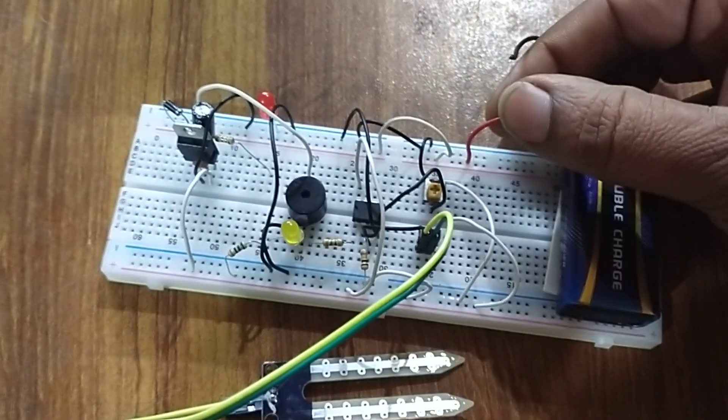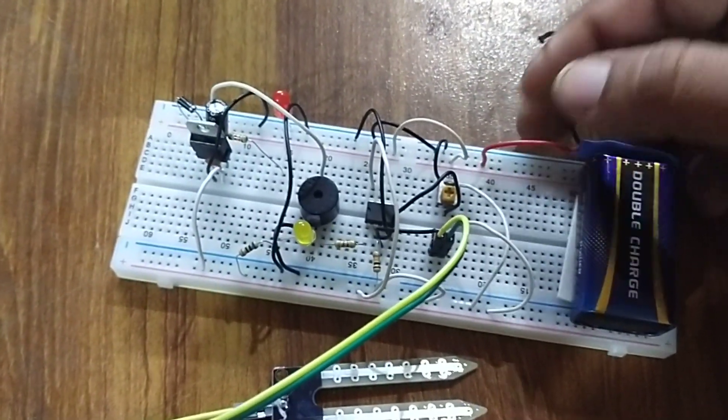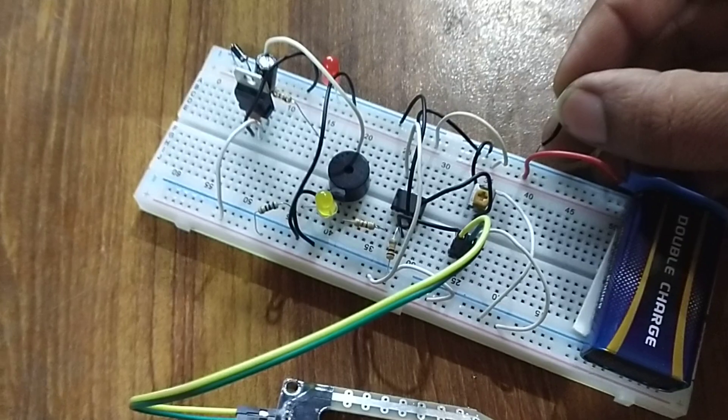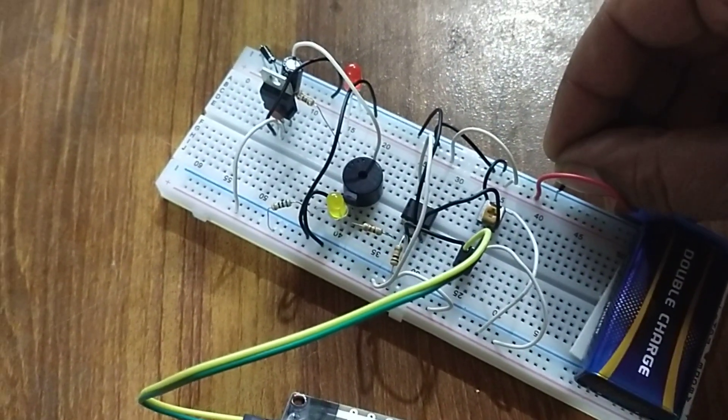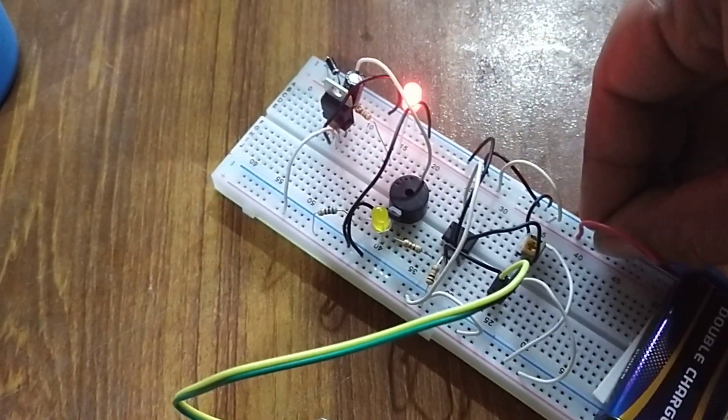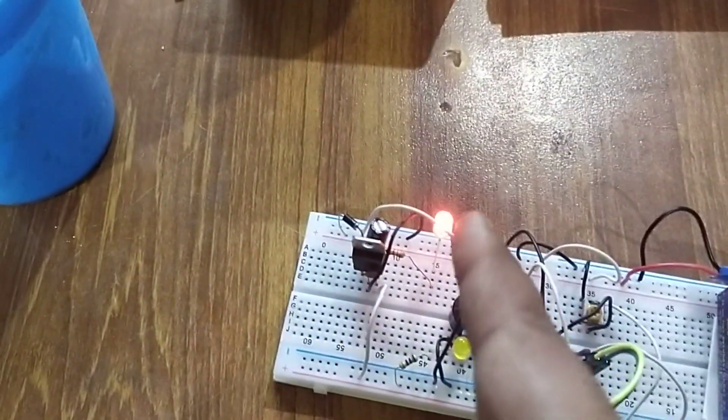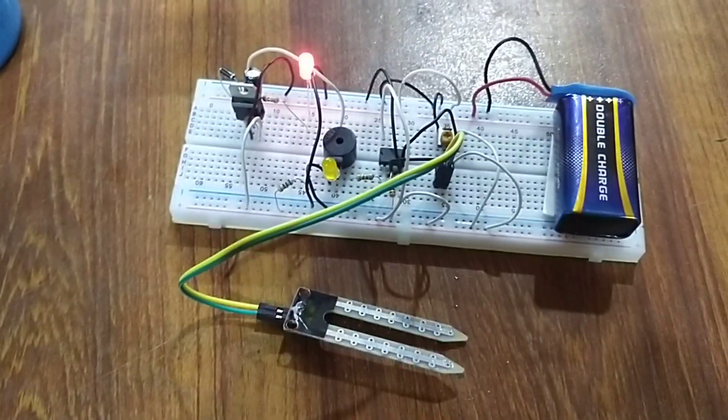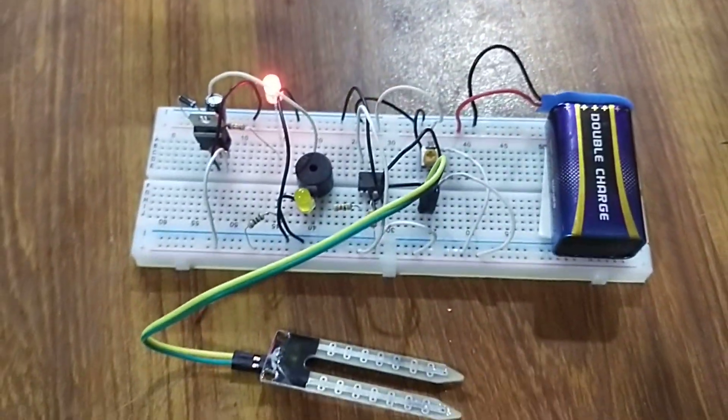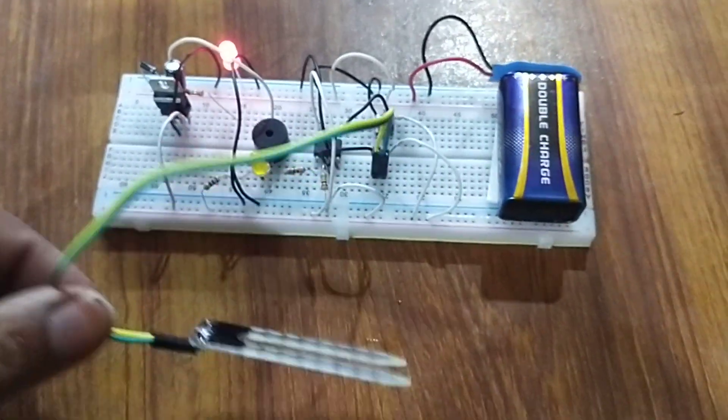We connect the positive and negative wires of the battery to the positive and negative connections. Now we attach the negative wire. The power LED is on and the circuit is working normally at this point.